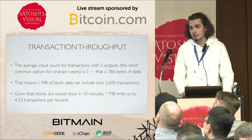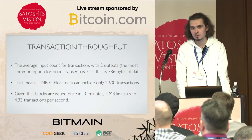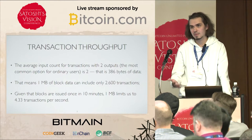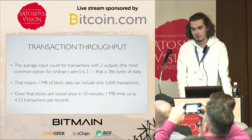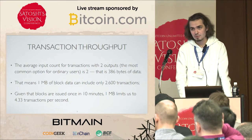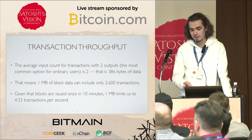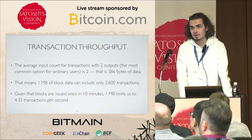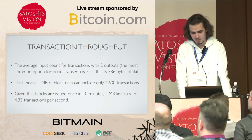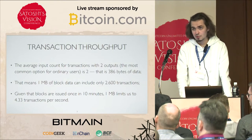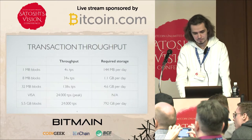Let's get to transaction throughput. The most common transaction consists of two outputs: the first for the recipient, the second for the sender's change. We calculated that for such a transaction the average input count is also two — two inputs, two outputs — that's 386 bytes of data. That means one megabyte can only include about 2,600 transactions. Given that blocks are issued once every 10 minutes, one megabyte limits us to approximately four basic transactions per second.